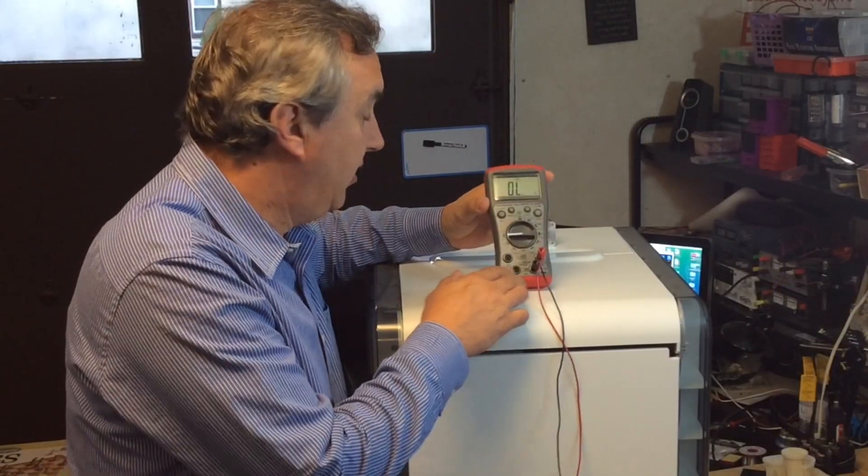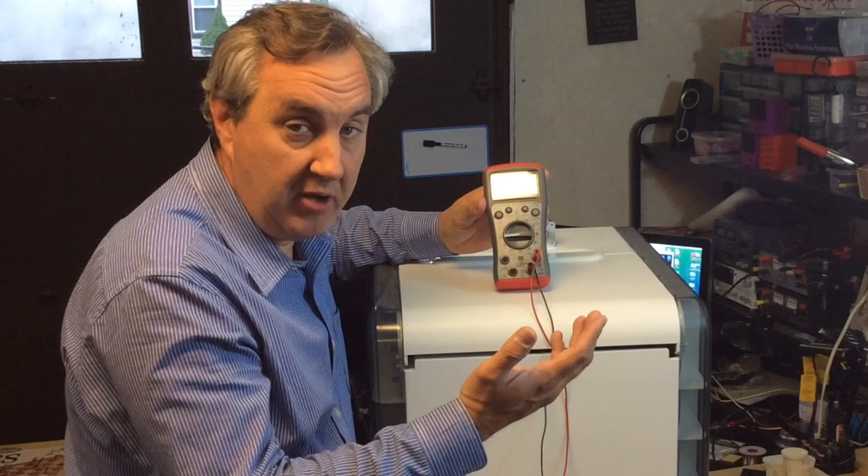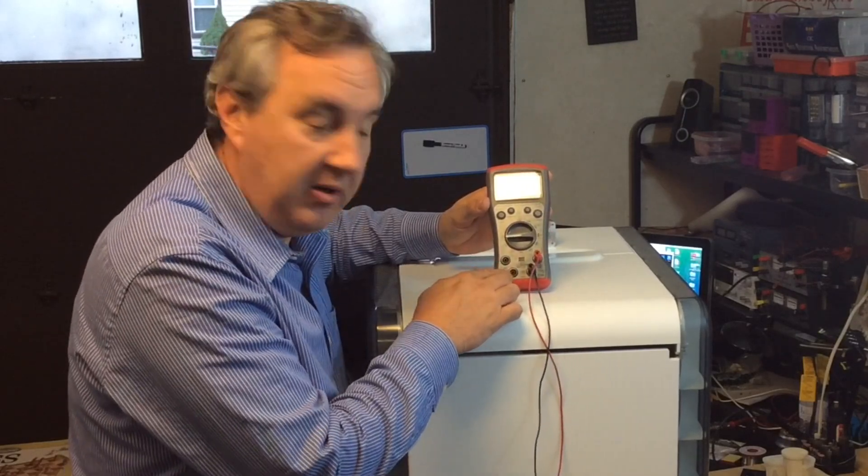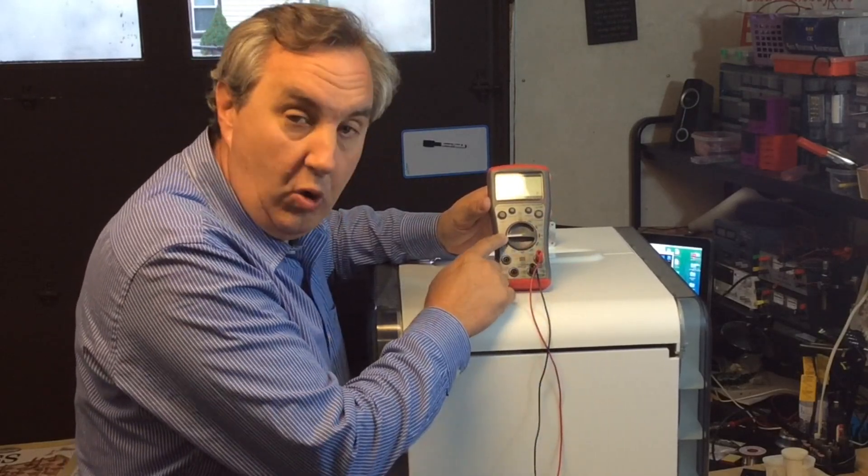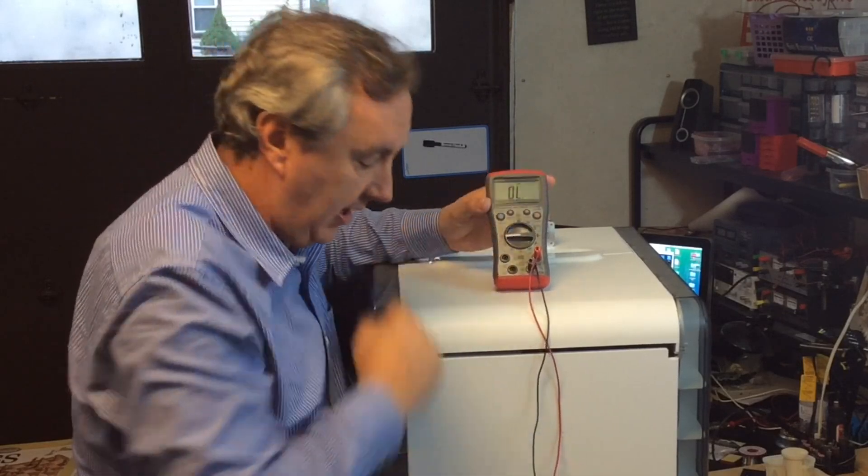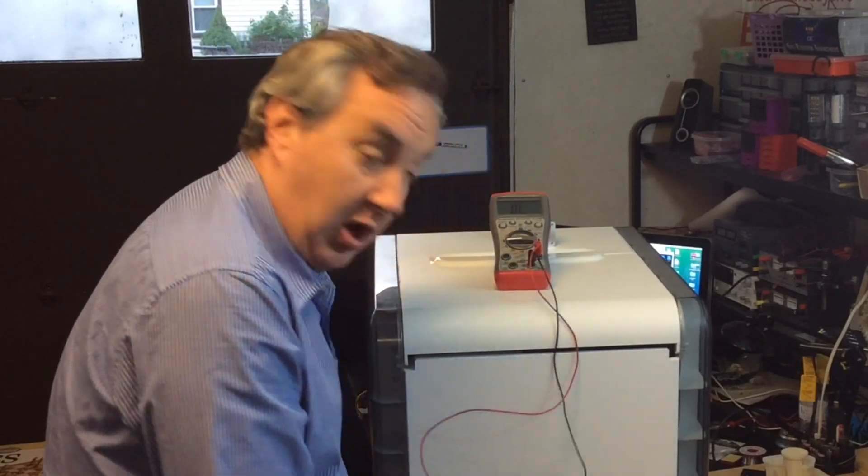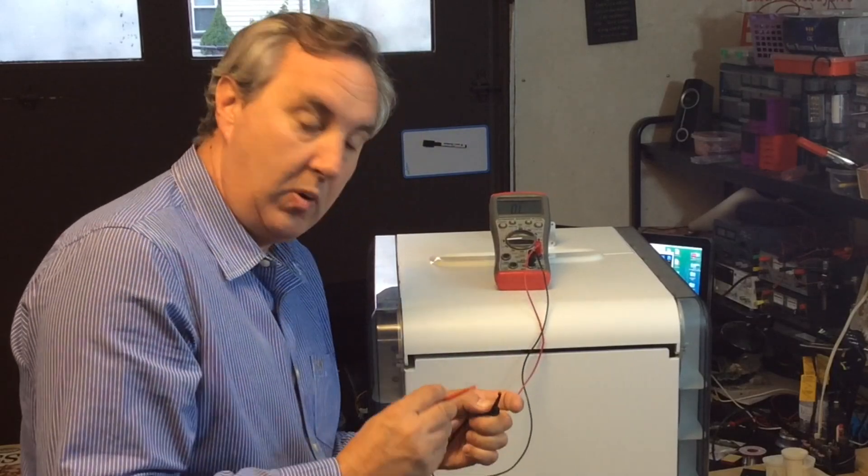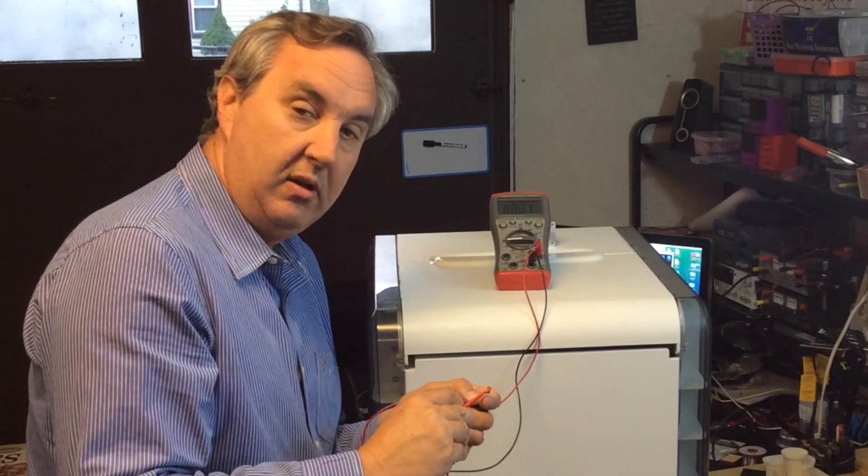So then I got out my multimeter. Some call it a multimeter, I call it a multimeter and I put it on the ohm setting. And then I put it on the sound setting. And all that is is an audible check for continuity. So when the two wires touch you get a nice beep.